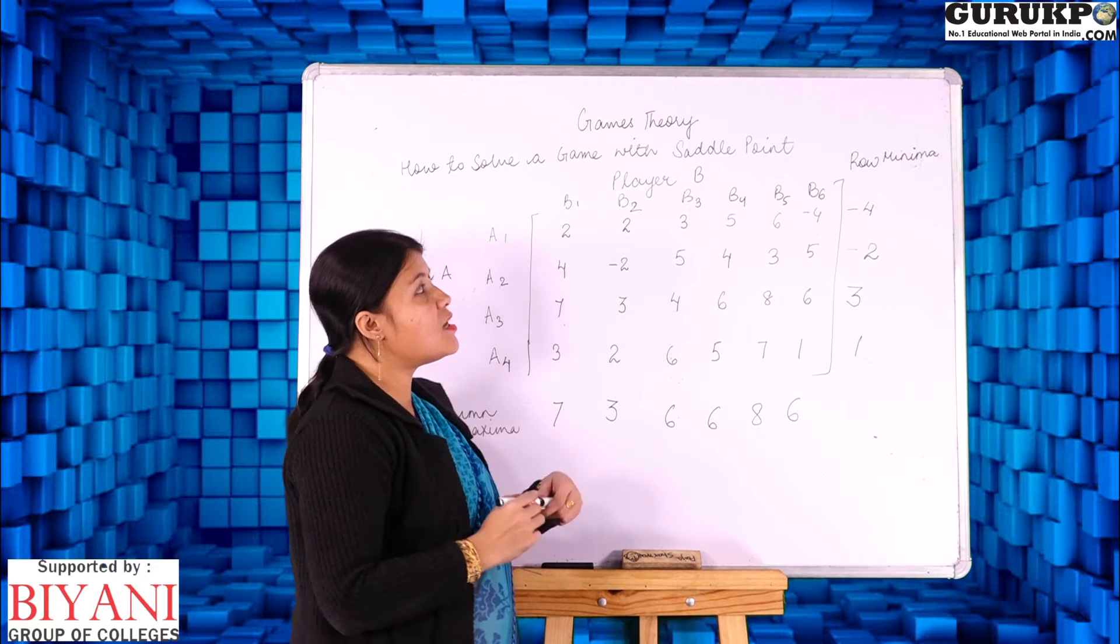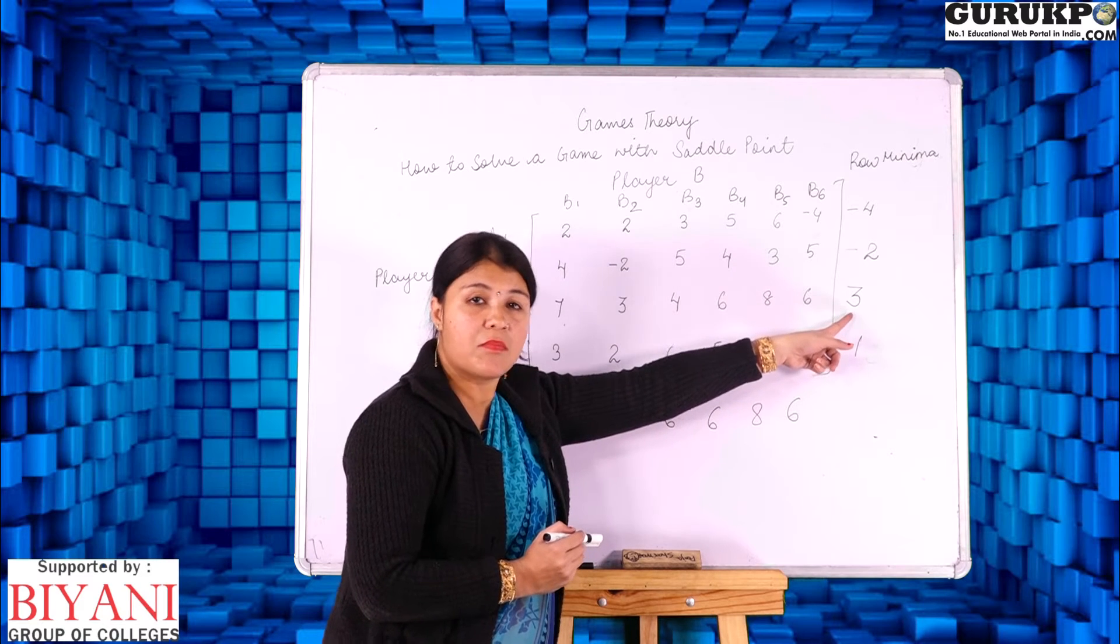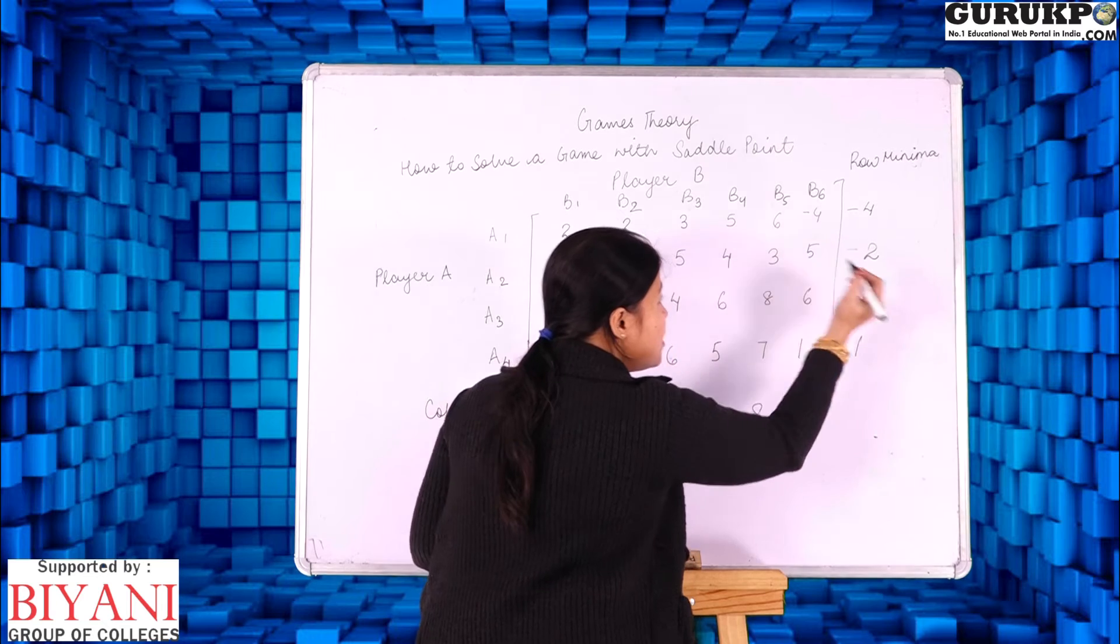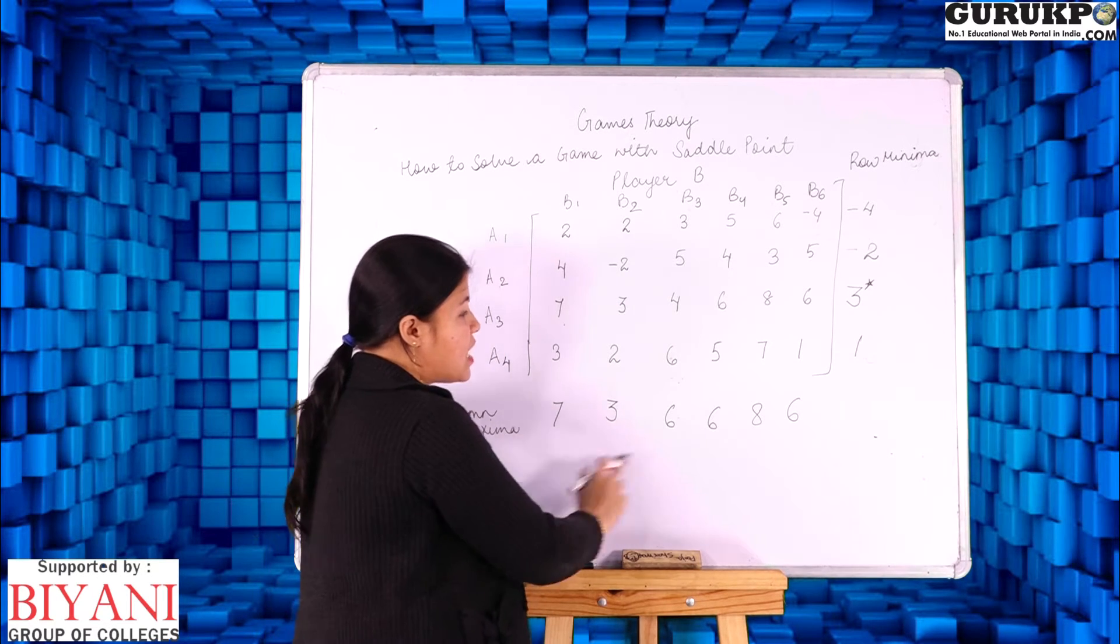After indicating row minima and column maxima we are going to indicate the maximum entry from row minima. So from row minima the maximum entry is 3. And from column maxima we are going to indicate the minimum entry that is 3.